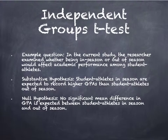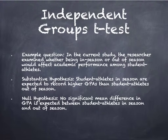Now we'll go over an example of each of the four types. For the independent groups t-test, an example research question would be: the researcher examined whether being in-season or out-of-season would affect academic performance among student-athletes. The substantive hypothesis would be that student-athletes in-season are expected to record higher GPAs than student-athletes out-of-season. The null hypothesis would be: no significant mean difference in GPAs is expected between in-season and out-of-season student-athletes.